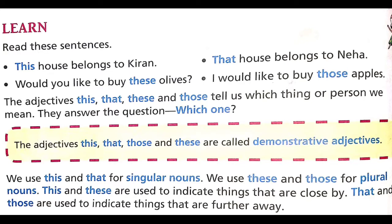Open page number 56 of your Cornerstone. Read these sentences: This house belongs to Kiran. That house belongs to Neha. Would you like to buy these olives? I would like to buy those apples. The adjectives this, that, these, and those tell us which thing or person we mean. They answer the question, 'Which one?' These are called demonstrative adjectives. We use this and that for singular nouns, and we use these and those for plural nouns.